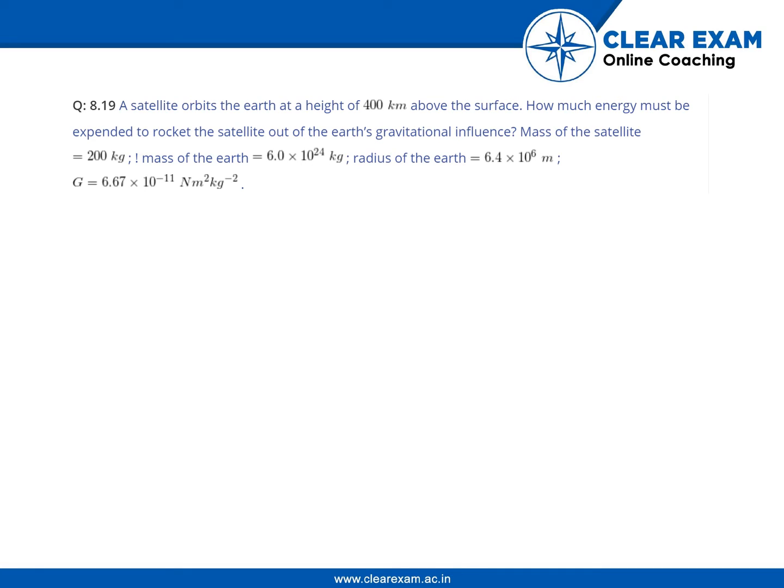The question given here is: a satellite orbits the Earth at a height of 400 kilometers above the surface. How much energy must be expended to rocket the satellite out of the Earth's gravitational influence?